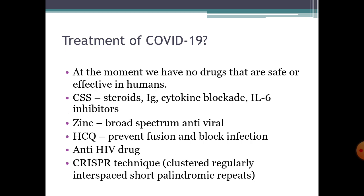It is advised that steroids should not be given routinely. Immunoglobulins can be given as convalescent sera — sera obtained from someone who has recovered from COVID-19. Cytokine blockade and interleukin-6 inhibitors can help reduce hyper-inflammation. Zinc acts as a broad-spectrum antiviral. Hydroxychloroquine, an anti-malarial drug, has been used recently and can inhibit immune activation and reduce production of cytokines.